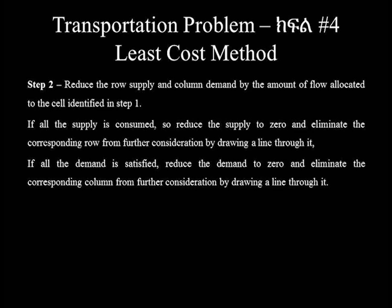Step 2: Reduce row supply and column demand by the amount allocated to the selected least cost cell. If all supply is consumed, reduce it to zero and eliminate the corresponding row from further consideration by drawing a line through it. If all the demand is fulfilled, reduce it to zero and eliminate the corresponding column from further consideration by drawing a line through it.